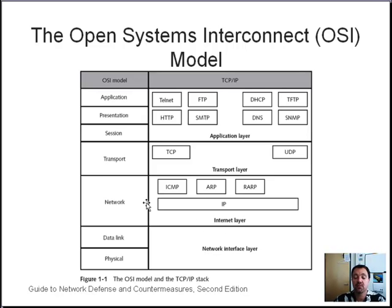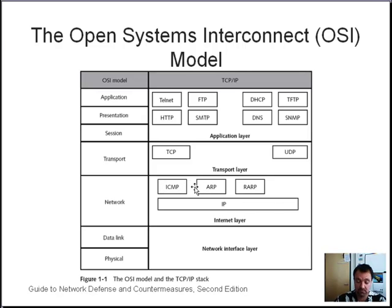Moving up one level, the network layer in the OSI model is synonymous with the internet layer in the TCP/IP model. That layer includes specific protocols: the IP layer (Internet Protocol), ICMP (Internet Control Message Protocol — ping), and ARP, the Address Resolution Protocol.